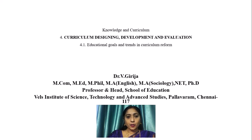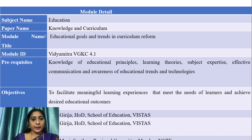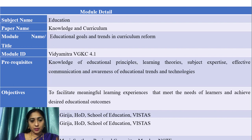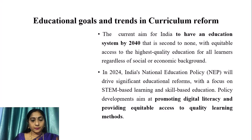This module is the first module of the fourth unit of the course Knowledge and Curriculum. This module deals with educational goals and trends in curriculum reform. The prerequisite is that every student teacher should have knowledge of educational principles, learning theories, subject expertise, effective communication, and awareness of educational trends and technologies. The objective is to facilitate a meaningful learning experience that meets the needs of learners and achieves the desired educational outcomes.